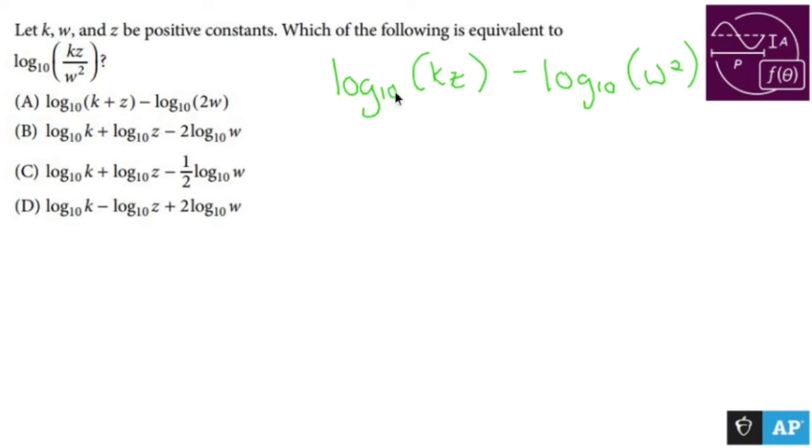This guy right here has log base 10 of k times z. In order to have k times z, I must have been adding the original logs to put those together. So I have log base 10 of k plus log base 10 of z.